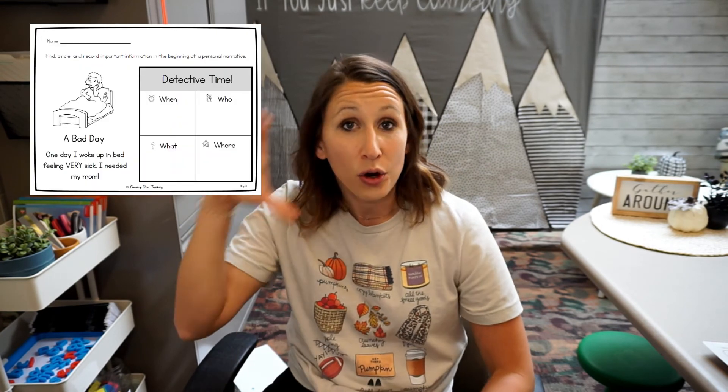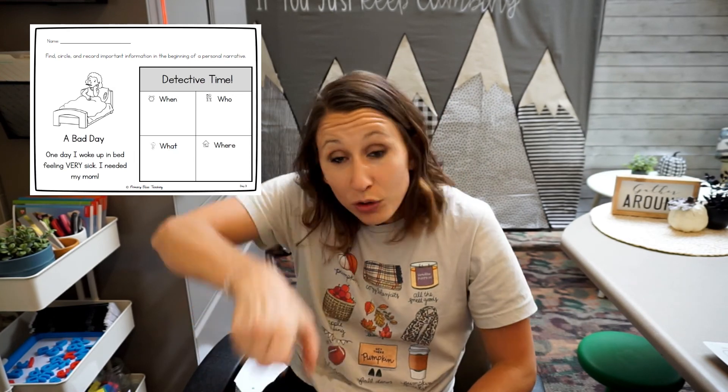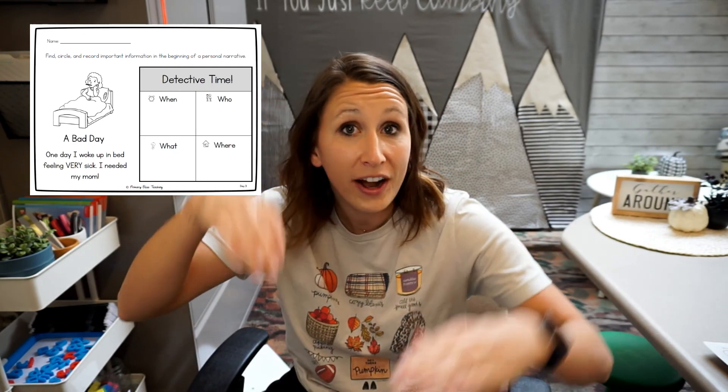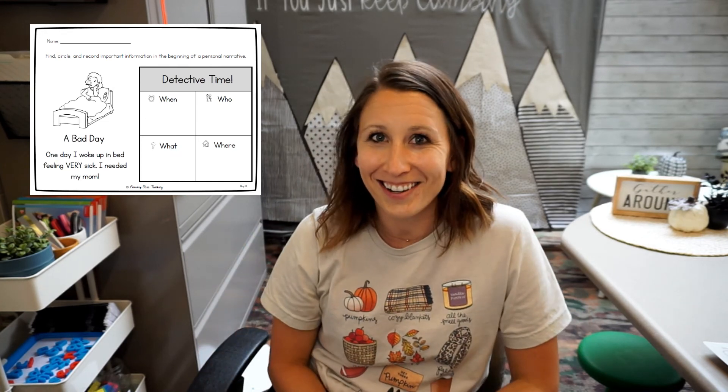You know what time it is — it's your turn to get started on your activities! Your goal today is: I can find the who, what, where, and when in the story. Get out your detective glasses and look for those on your activity sheet. If you finish, flip the page over and start trying to write the beginning of your own story including the who, what, where, and when. Go ahead and get started!